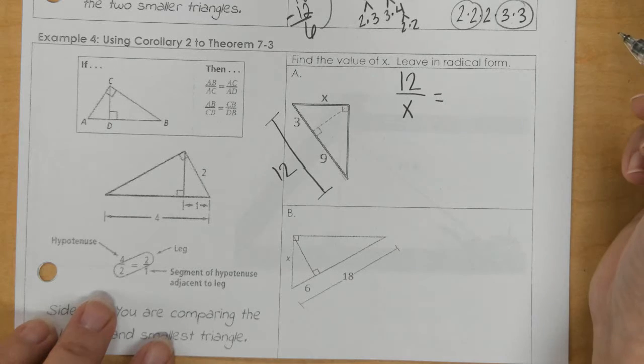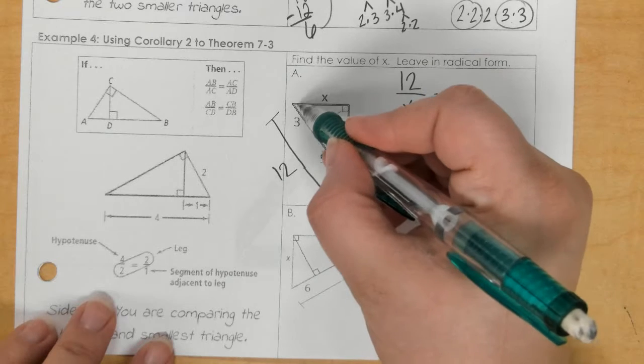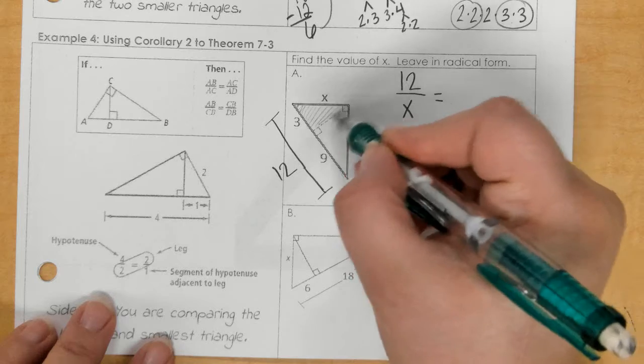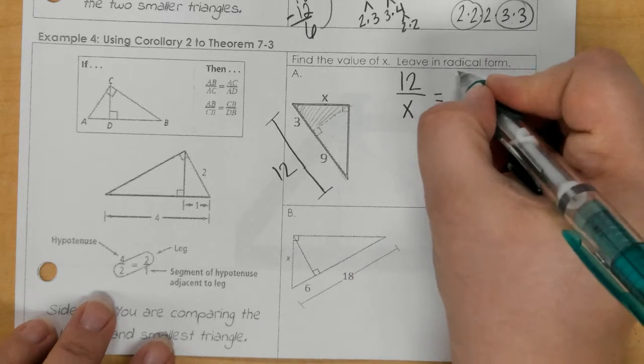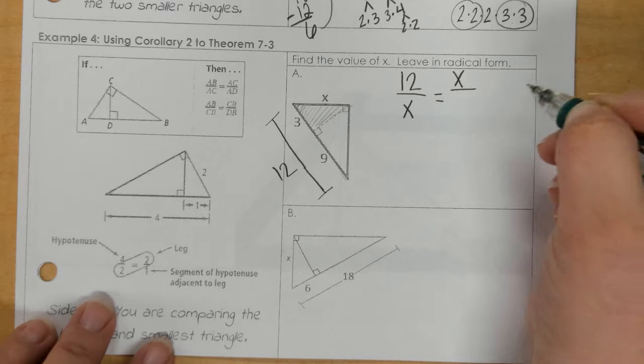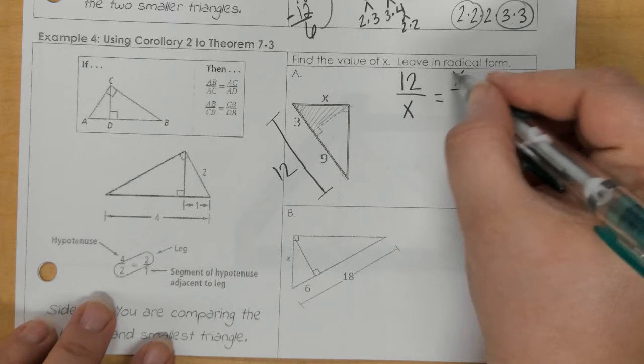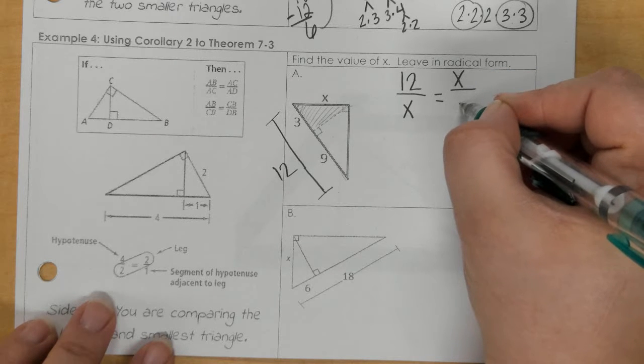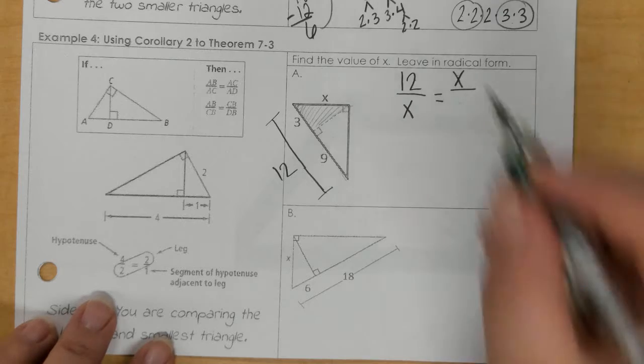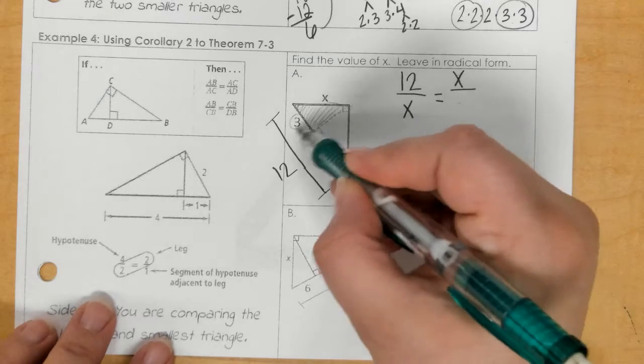Then I'm looking at the smallest triangle, which is this triangle here. And x is a representative of the hypotenuse. So, now it's x over, because this was hypotenuse, hypotenuse, over the leg.